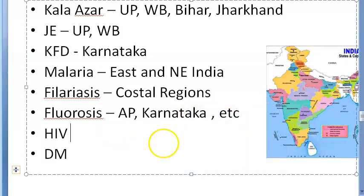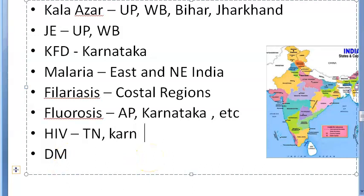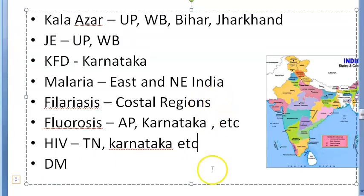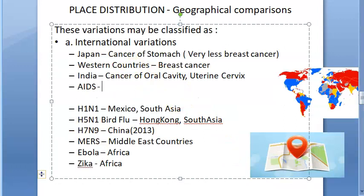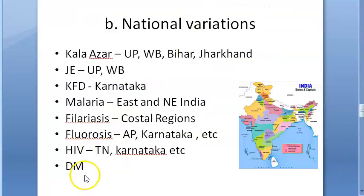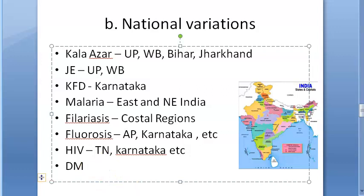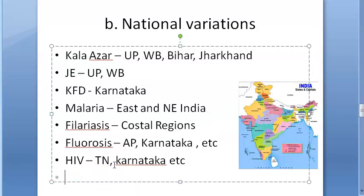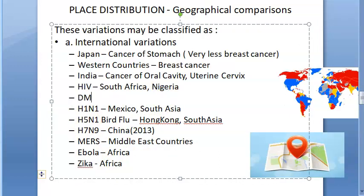HIV prevalence is higher in Tamil Nadu and Karnataka among Indian states. Diabetes mellitus is more prevalent in India and China — this is more of an international observation. These represent important national and international variations in disease distribution.